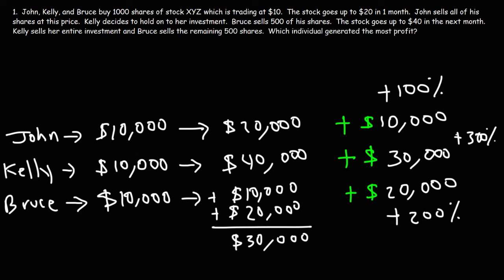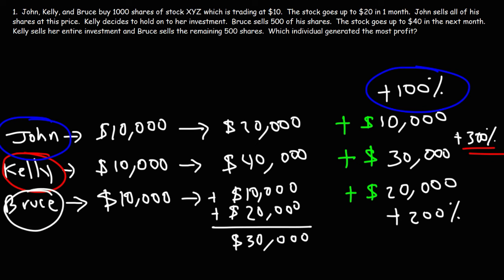Looking at the outcome of these three individuals, Kelly generated the most profit because the price continued to increase, she held on to her shares, and received the greatest gain. John had the lowest gain because he sold everything at $20. Bruce is somewhere in the middle — he sold some of his shares when the price went up, but still held some. So his profit potential is between John and Kelly.